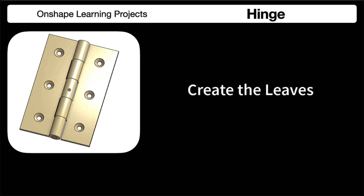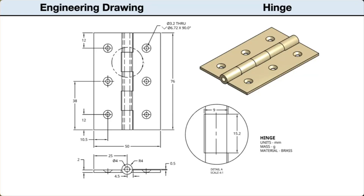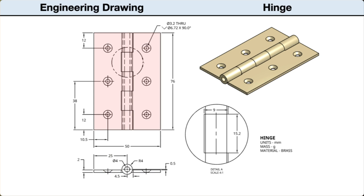In this segment, we will create the leaves of the hinge. Let's start by examining the drawings. This drawing shows views of both leaves of the hinge assembled together. There is an isometric drawing to help us visualize the part in three dimensions. There are two orthographic views — in the lower left, a front view, and aligned above the front view is a top view.